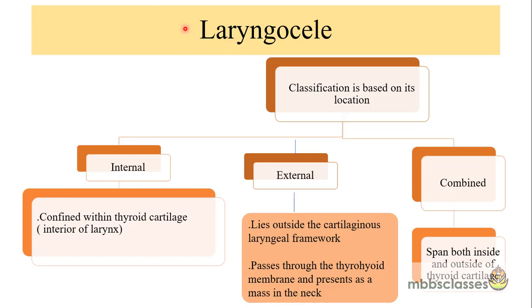Similarly, laryngoceles are classified based on location into three types: internal, external, and combined. An internal laryngocele is confined within the thyroid cartilage — within the laryngeal framework. An external laryngocele lies outside the cartilaginous laryngeal framework, passing through the thyrohyoid membrane and presenting as a mass in the neck; this is mostly seen in adults. The combined type spans both inside and outside the thyroid cartilage. In infancy, laryngocele causing respiratory obstruction is mostly the internal type.